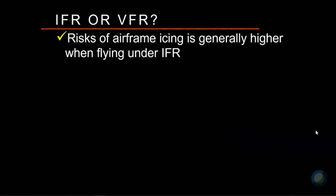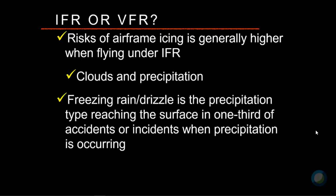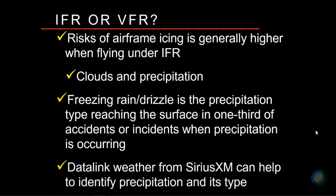Should you fly IFR or VFR from the perspective of icing? The risks of airframe icing are generally higher under instrument flight rules because you're exposed to more hazards — you can fly in clouds and precipitation when temperatures are appropriate for icing. However, even under VFR you can get freezing rain and drizzle. In fact, in most icing accidents or incidents, one third of cases falling to the surface was freezing rain or freezing drizzle, not only in the clouds but below them. Data link weather like Sirius XM can help identify precipitation type.